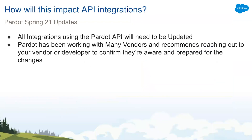Another thing that will be impacted are API integrations. All integrations using the Pardot API will need to be updated to use the Salesforce authentication method instead of the Pardot authentication method. More information on this is available through the Pardot API documentation site — you could literally Google 'Pardot API documentation' and find it that way. If you're using a third-party API integration tool like Zapier, for example, then you'll need to work with Zapier or whatever the service is to update their integration.